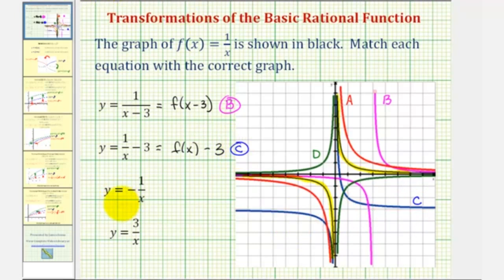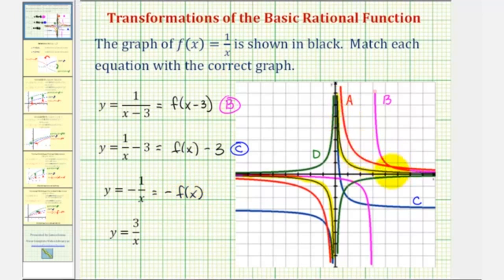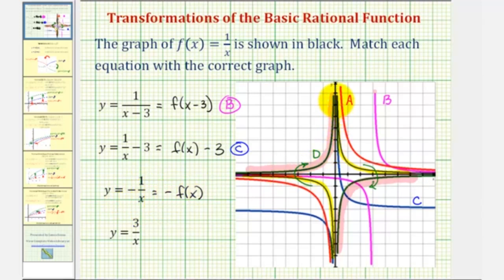Next we have y equals negative one divided by x. If f of x equals one divided by x, this is equivalent to negative f of x. This function changes the sign of all the y values of the basic function, which reflects the graph across the x-axis. Starting with the basic function highlighted in yellow, reflecting across the x-axis gives us the green function in the second and fourth quadrants — graph d.